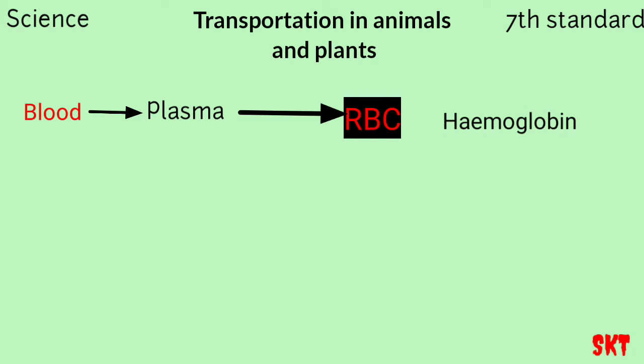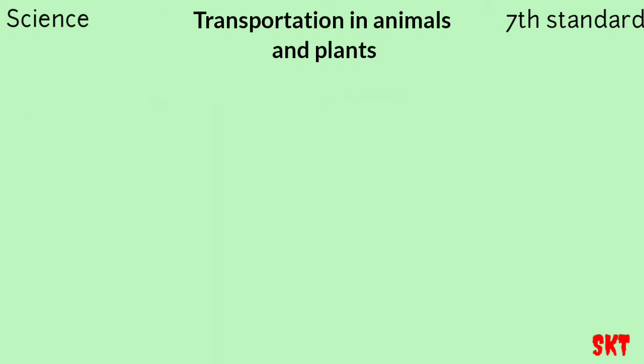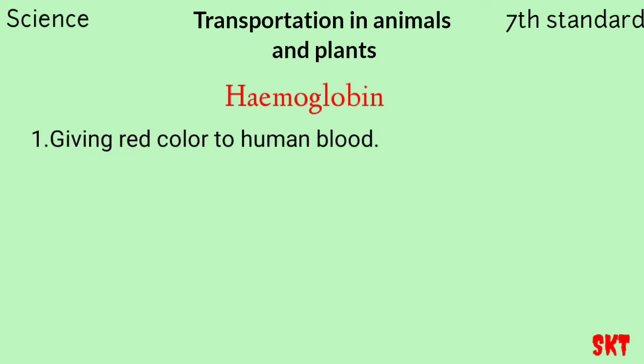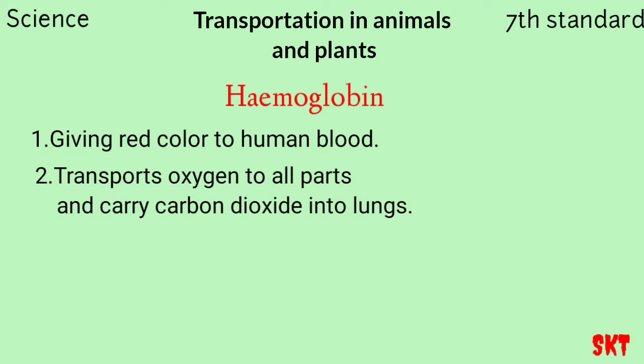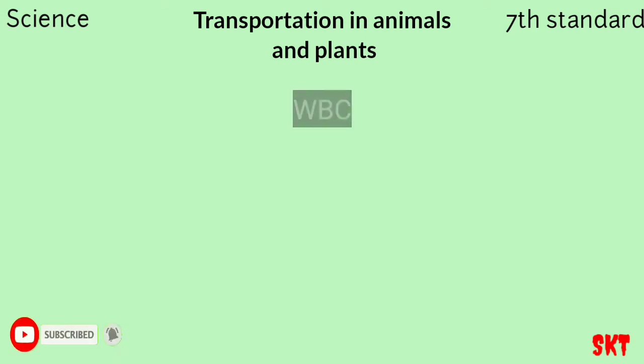Hemoglobin gives red color to our blood — that's why when you have an injury, red colored fluid comes out. Hemoglobin also does another important job: it transports oxygen to all parts of the body and collects carbon dioxide from all parts of the body and gives it to the heart. To summarize: hemoglobin has two functions — it gives red color to our blood, and it transports oxygen and collects carbon dioxide.